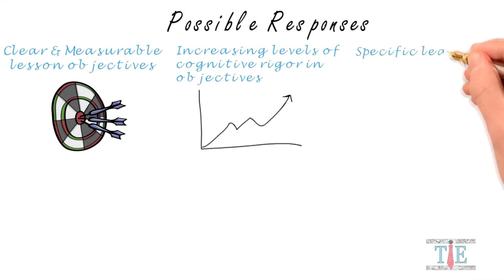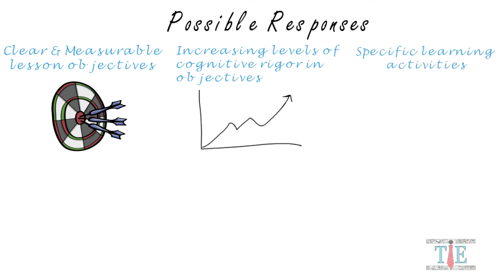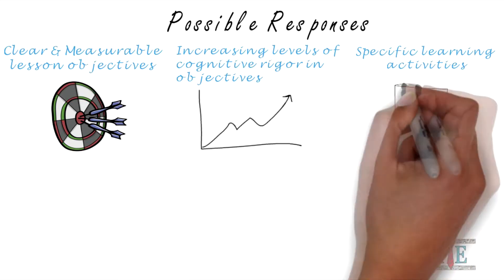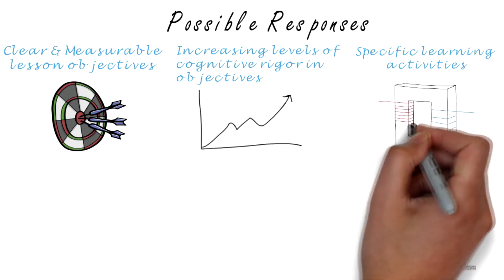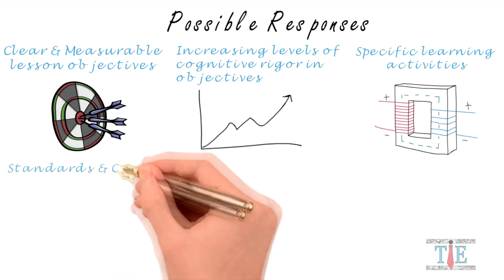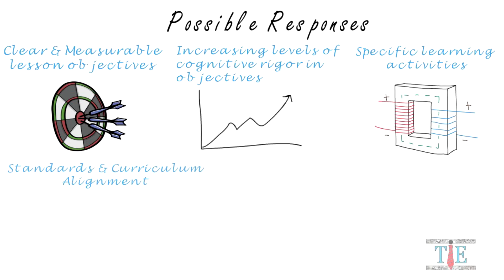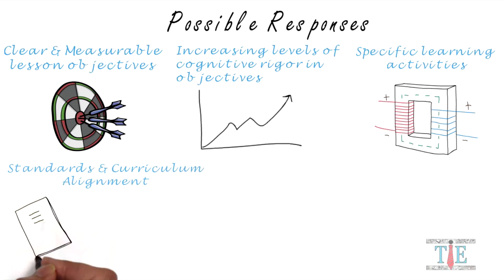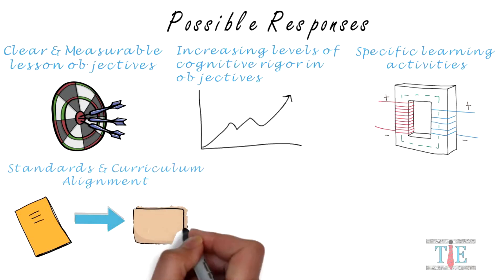Third on the list, look for specific learning activities. The success is in the details — great teachers plan for specific activities and provide step-by-step details. Next, look for alignment of curriculum and standards. Match the lesson plan standards to its corresponding map in the curriculum.